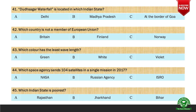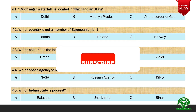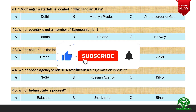Next question: Which space agency sent 104 satellites in a single mission in 2017? Options are A. NASA, B. Russian agency, and C. ISRO. And the right option is C. ISRO.